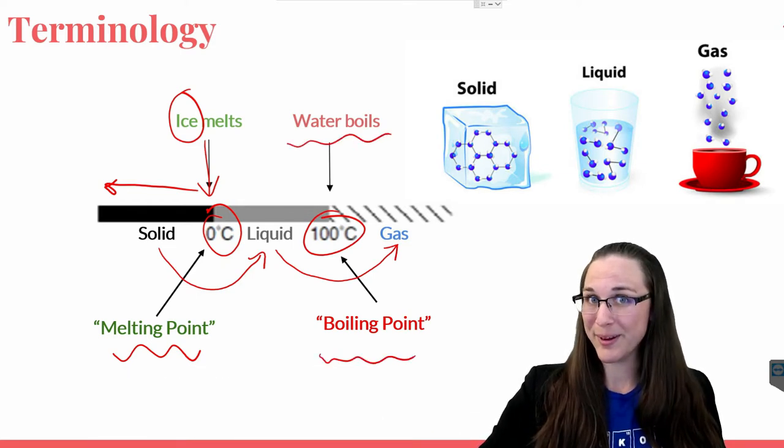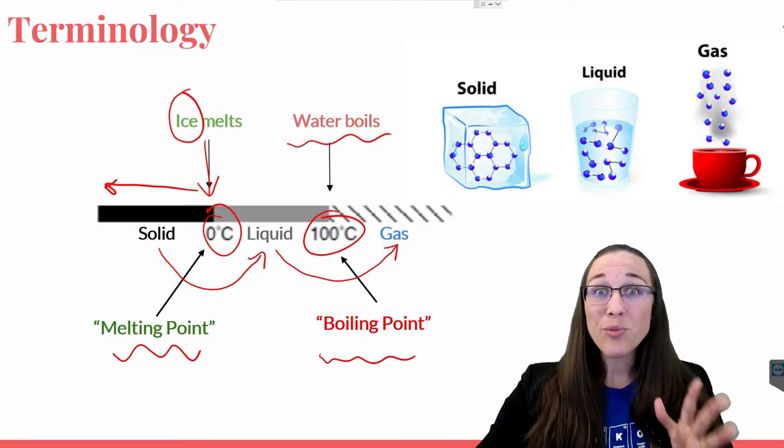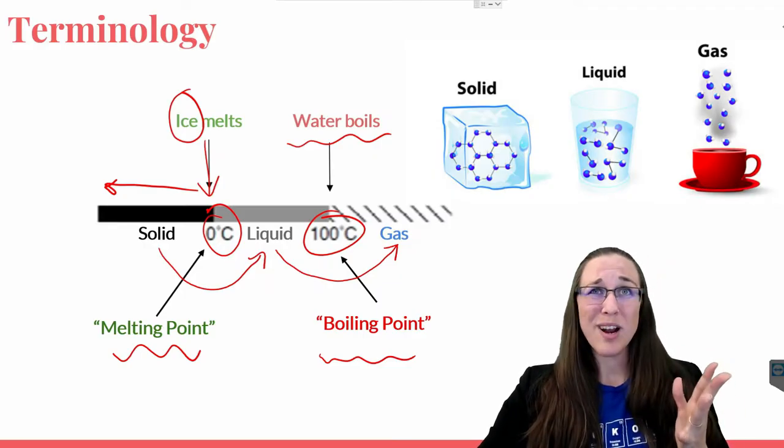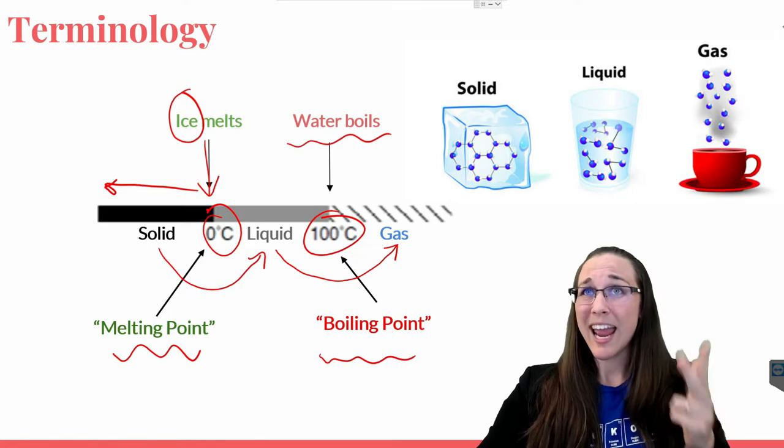And then from a liquid to a gas at a hundred degrees Celsius where water boils, and it's also called the boiling point. I know, we're pretty inventive with our names here in chemistry. Has all three phases in the case of water. We see solid, liquid, and gas.